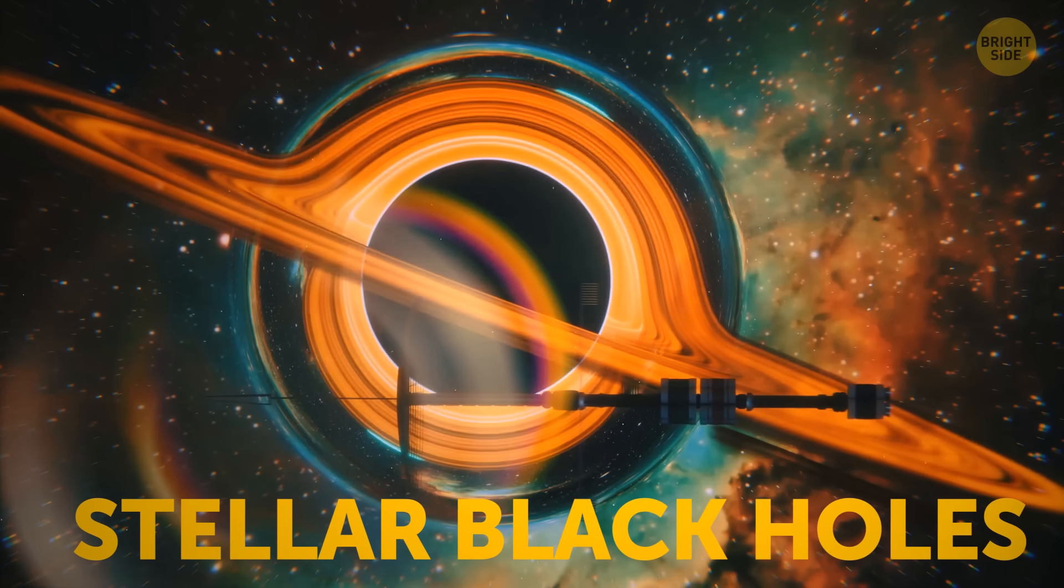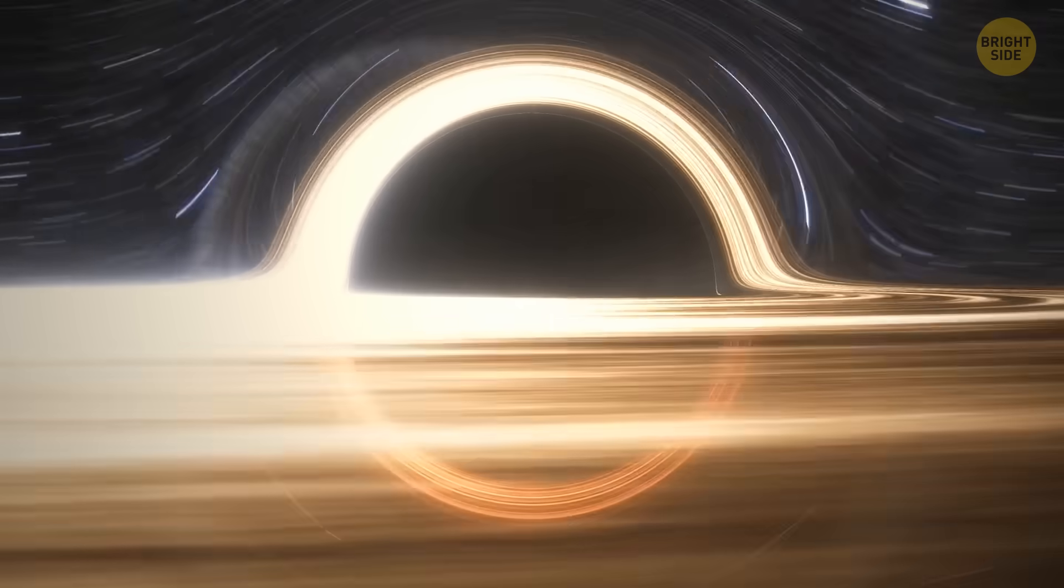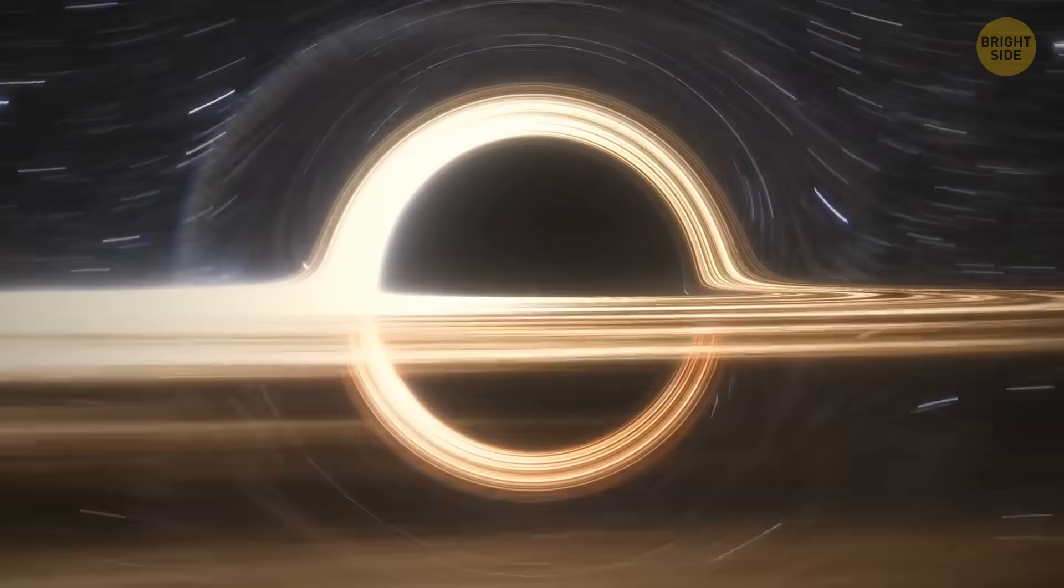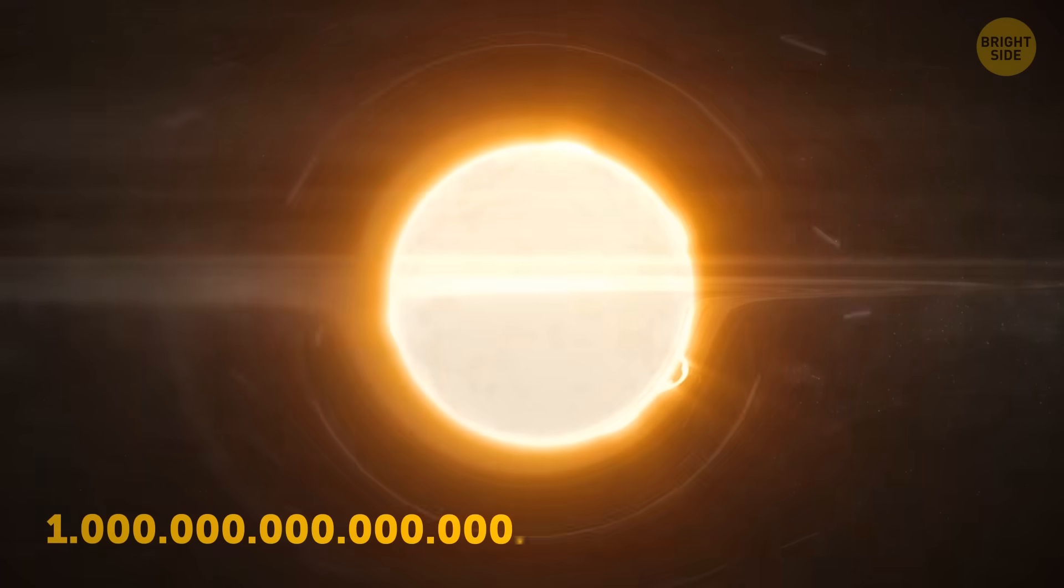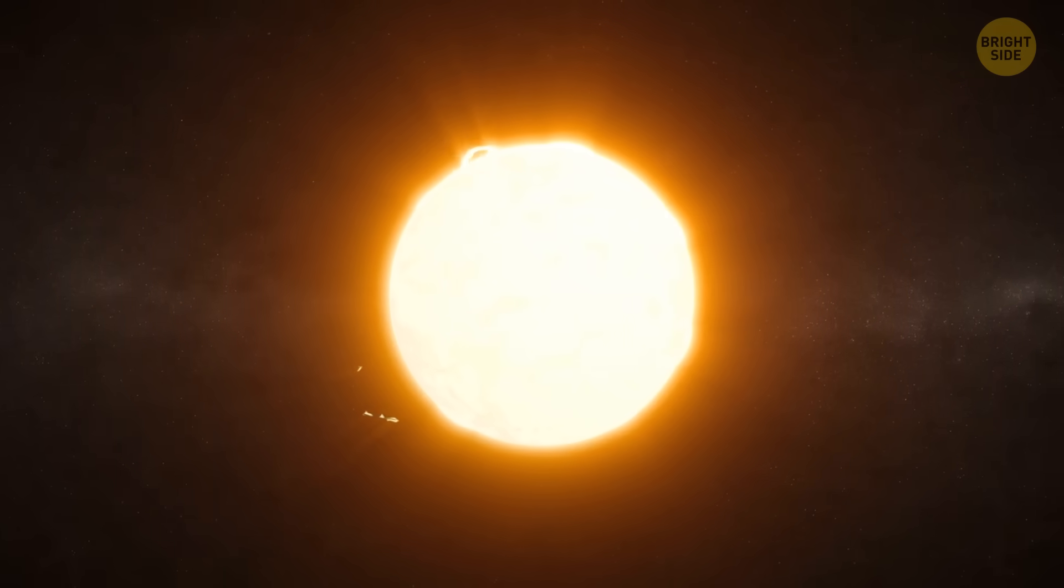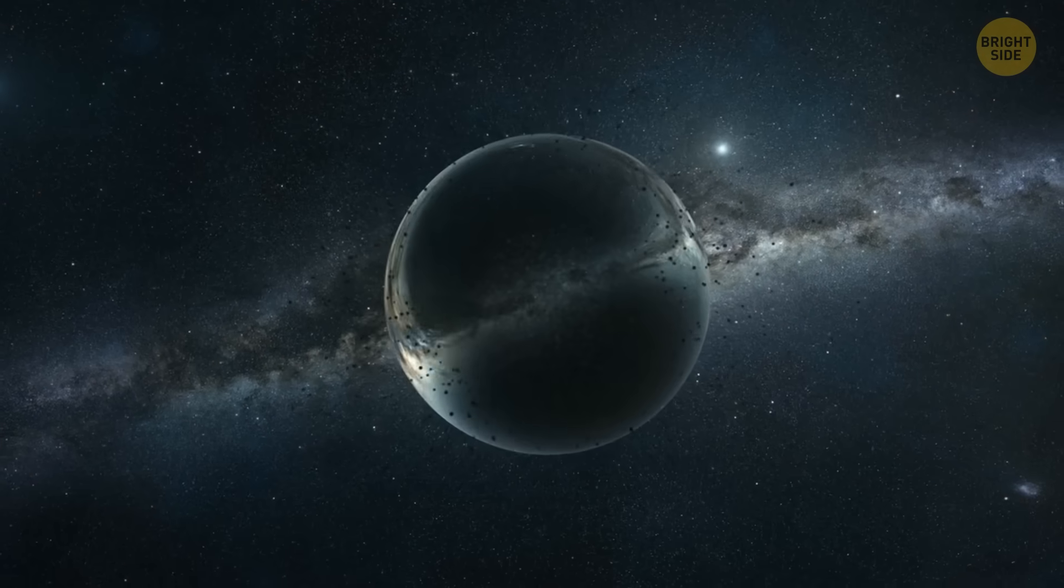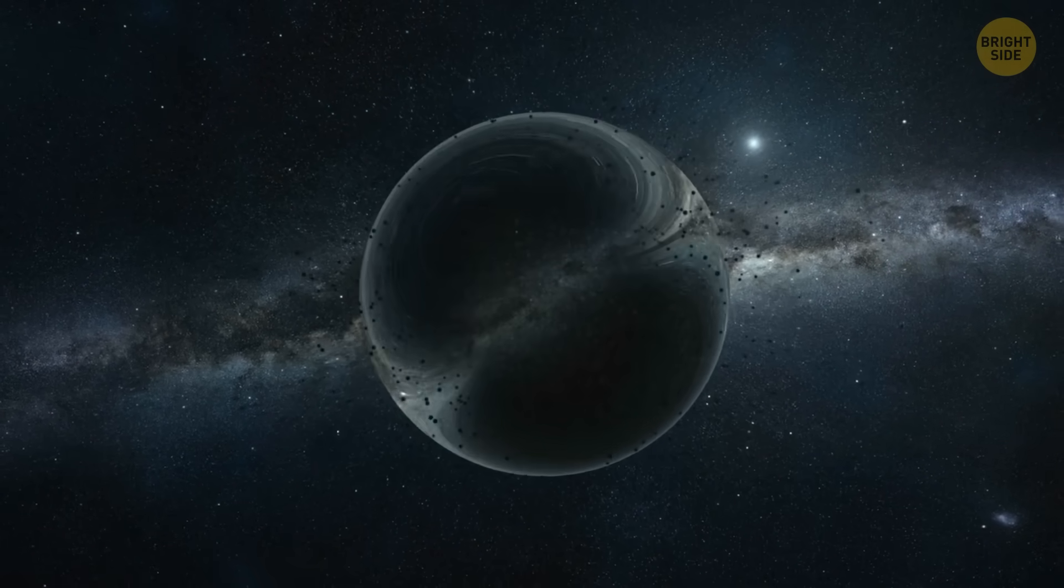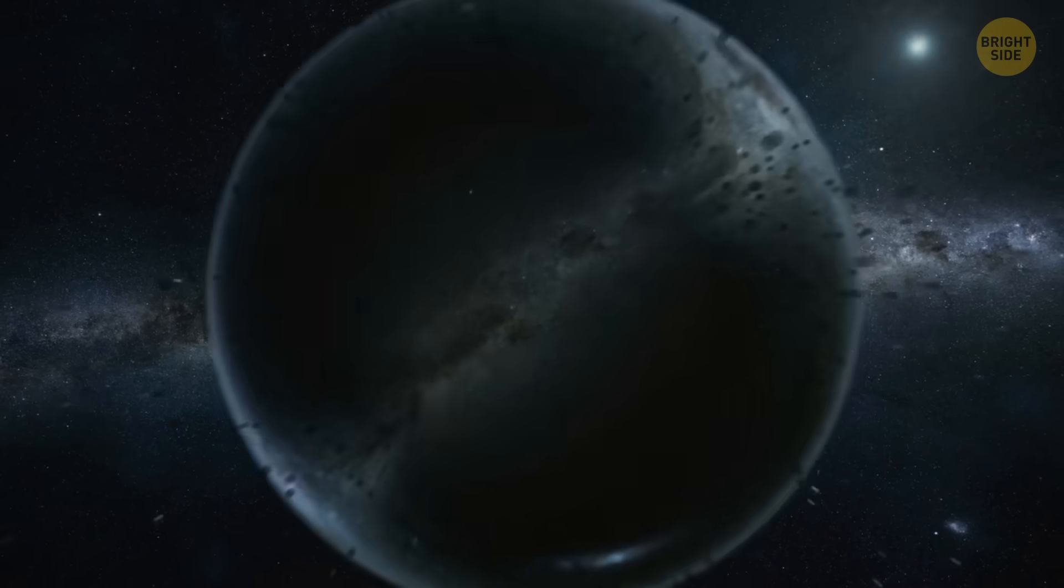The first ones are called stellar black holes. Usually, they weigh tens of solar masses, which doesn't seem like much until you remember that the sun weighs nonillions of pounds. Don't even try to imagine this number. It has 30 zeros. The smallest black hole known to us is about 2 to 4 times heavier than the sun. It's a lonely hole that wanders through space in search of prey.